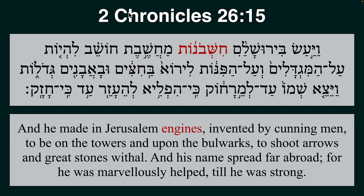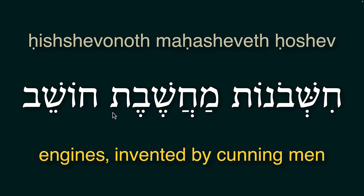Here we read — I will read it in English: 'And he made' — that is Uzziah, also known as Manasseh — 'he made in Jerusalem engines,' says the King James Bible, 'invented by cunning men to be on the towers and upon the bulwarks to shoot arrows and great stones withal, and his name spread abroad.' So he made engines. Khishavonoth Mahshavet Hoshev — that's the sentence. The translation 'engines invented by cunning men' is not quite accurate, but we'll come to that.